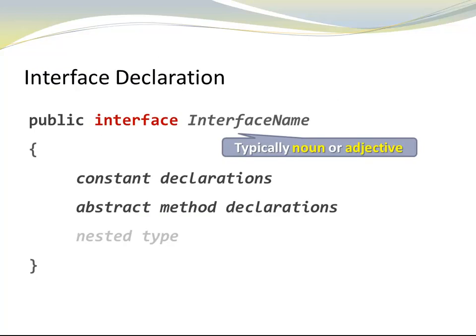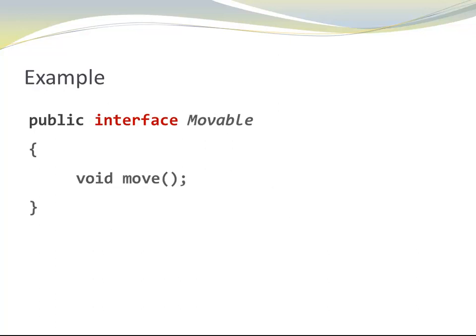Notice the naming of interfaces. One was called SwingConstants, one was called Comparable. Interface names are typically nouns or adjectives. Let's create our own interface. I could have a public interface called Movable, and my Movable has one method called move. Returns void, doesn't require any parameters.